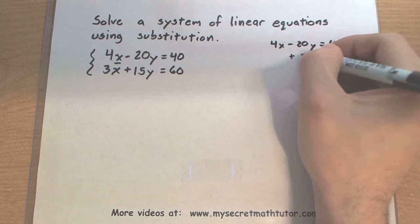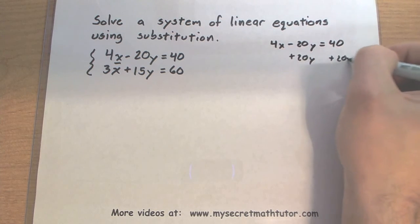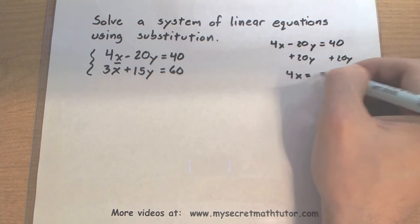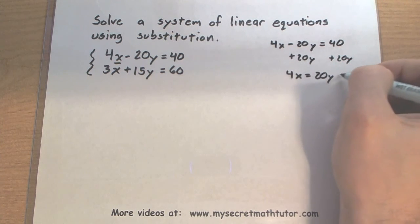It looks like we'll have to add 20y to both sides. This will give me 4x equals 20y plus 40.